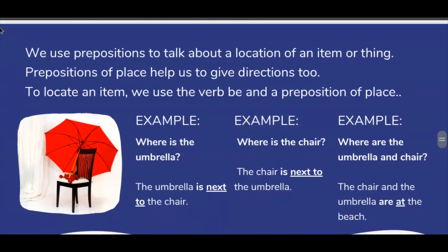We use prepositions to talk about the location of an item or thing. Prepositions of place help us to give directions too. To locate an item, we use the verb be and a preposition of place.